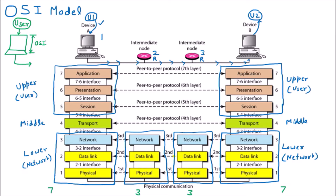From this diagram we learn that there is a system where user one is sending data graphically and it is going to wire, requiring all seven layers — three for the user, one middle layer, and three for the network. The data moves across and is given to user two on the receiving side. Again, three lower layers, one middle layer, and three upper layers are required — seven layers total.